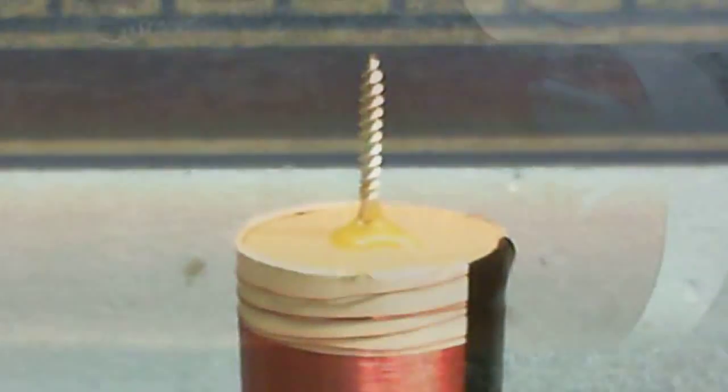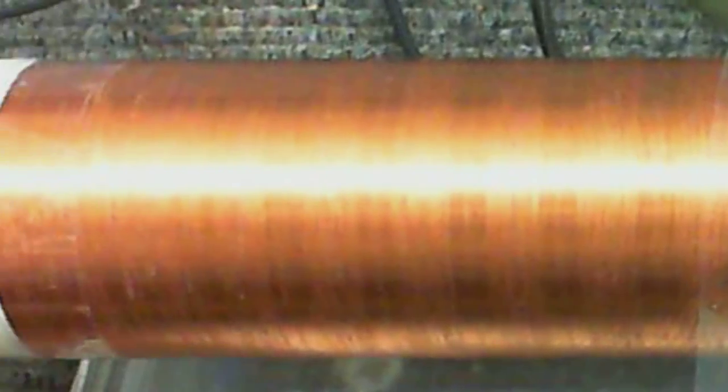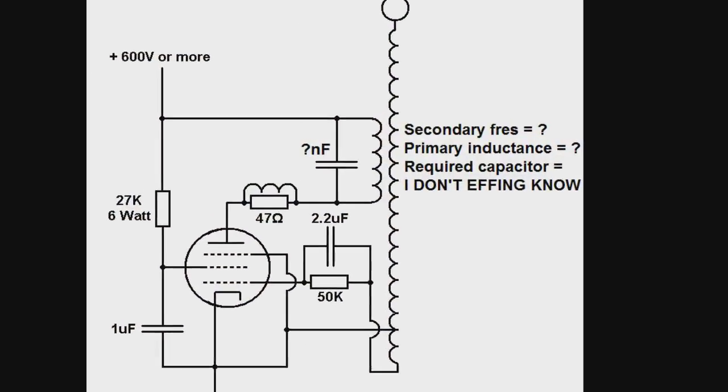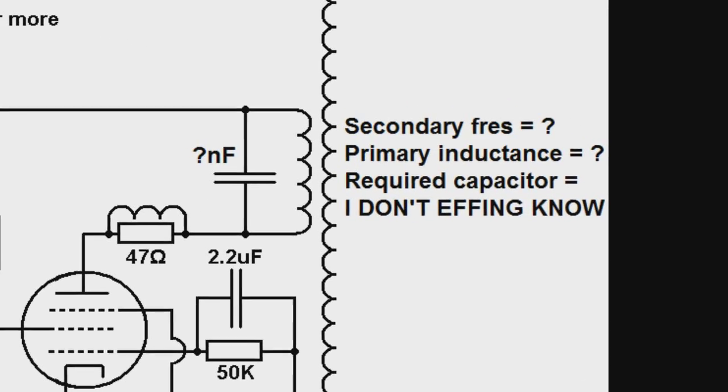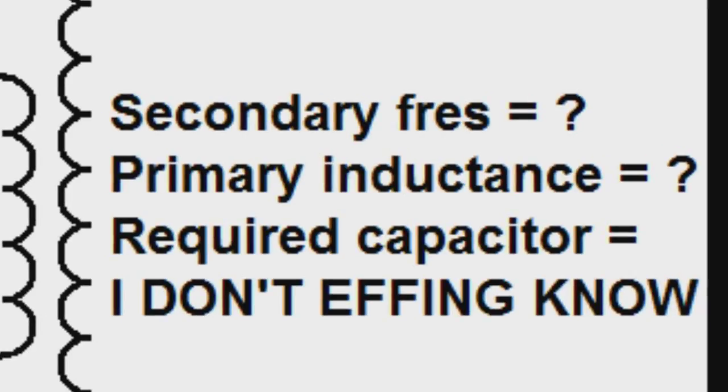Solid state Tesla coils are easier to make and everything should work on its own. Well yes, when building vacuum tube Tesla coils, it can be difficult to tune it and find the capacitors needed to achieve resonance.